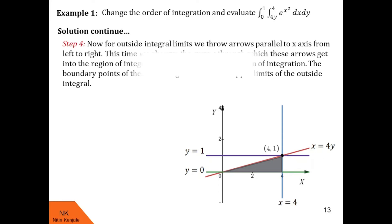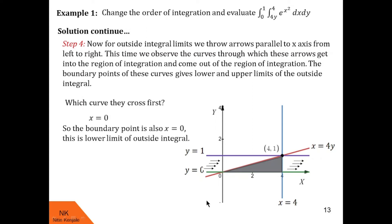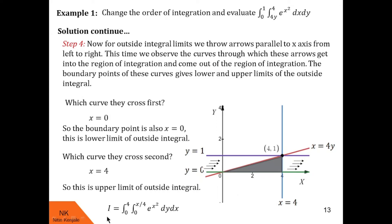Now we go to step 4 for the outside integral limits. We throw arrows parallel to the x axis from left to right and observe which curves they cross. They first cross x = 0, which becomes the lower limit of the outside integral. While leaving the region, they cross x = 4, so x = 4 is the upper limit of the outside integral. So the new integral after changing the order from dx dy to dy dx has inside limits 0 to x/4 and outside limits 0 to 4.